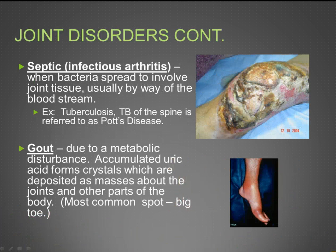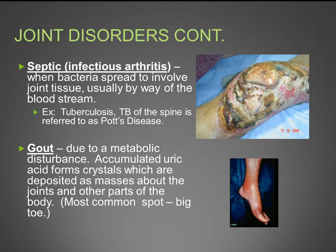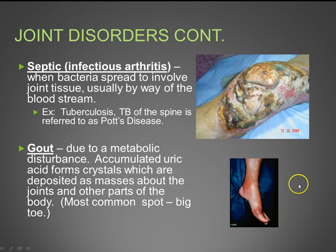Next is septic arthritis, which is infectious arthritis. This is when bacteria spreads to involve joint tissue, usually by way of the bloodstream. For example, tuberculosis of the spine is referred to as Pott's disease. The bacteria gets into the joint, affects the joint tissue, causes swelling and infection, and starts eating away at the tissue.